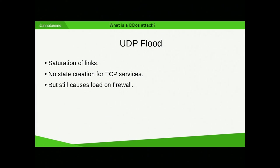UDP floods, as mentioned, basically saturate links. I won't talk about them much today because we introduced traffic shaping on switches. Since we do not serve any UDP-based services apart from some DNS, with good enough switches you can create policies to kill this traffic directly when it comes from uplinks. I just limited it to 50 megabits per second per uplink, and that's totally enough.